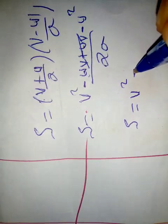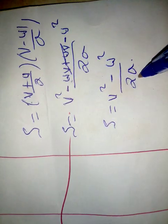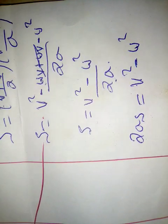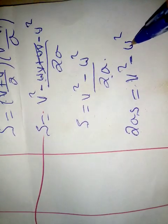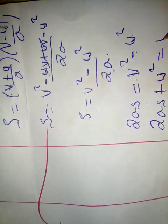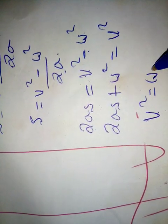2AS is equal to V times V minus U times U. V squared minus UV plus UV minus U squared. That gives V squared minus U squared. Therefore 2AS is equal to V squared minus U squared, which means V squared is equal to U squared plus 2AS.